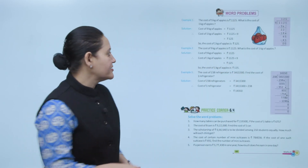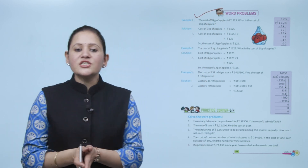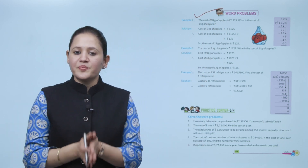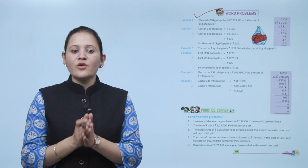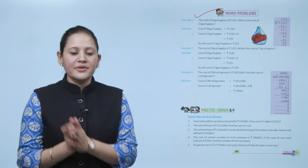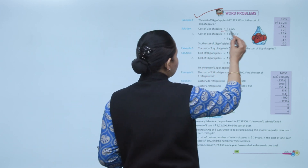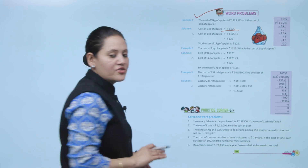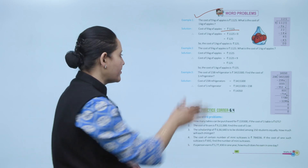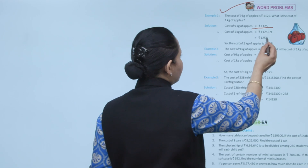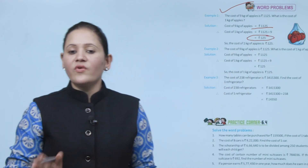Next, word problems. The cost of 9 kg of apples is rupees 1125. What is the cost of 1 kg? Since 9 kg costs rupees 1125, divide 1125 by 9 — the answer is rupees 125. That is the cost of 1 kg of apple.